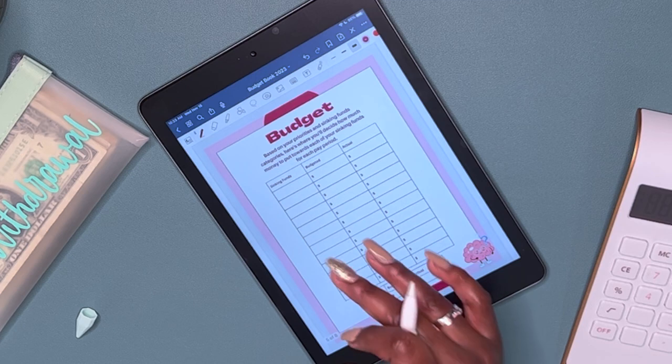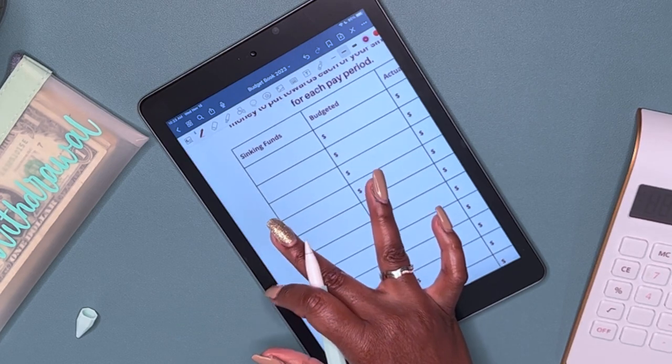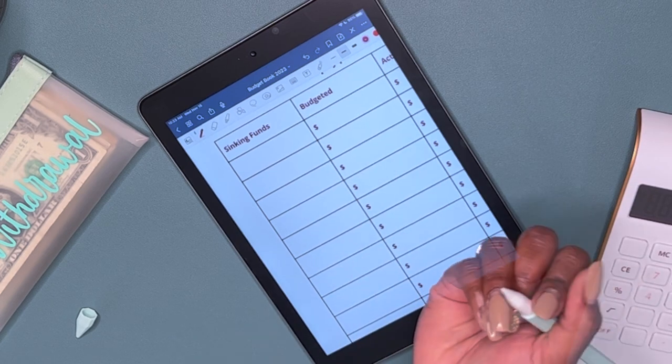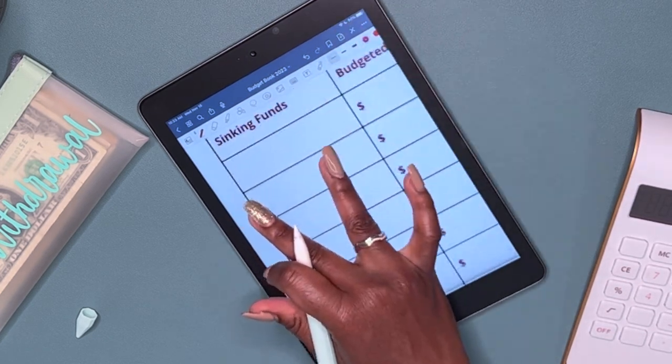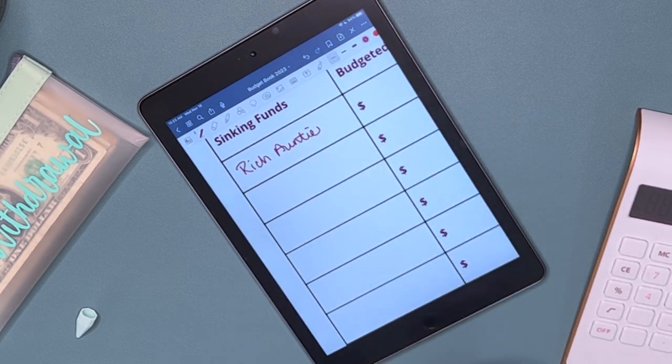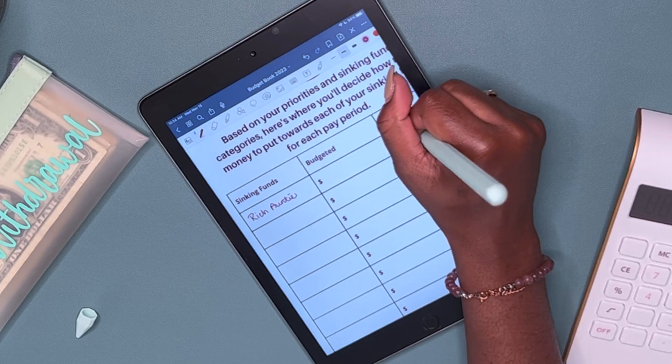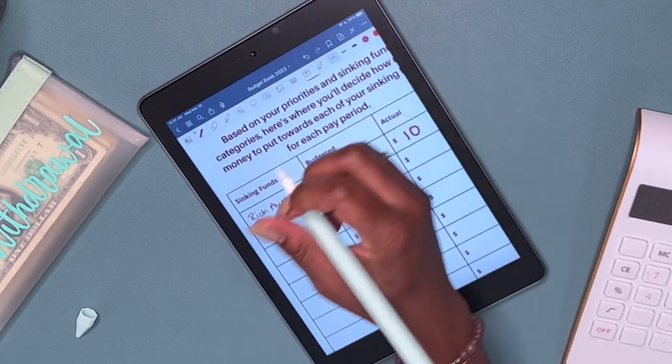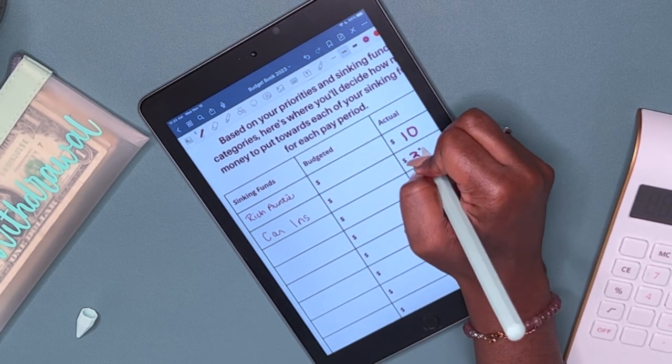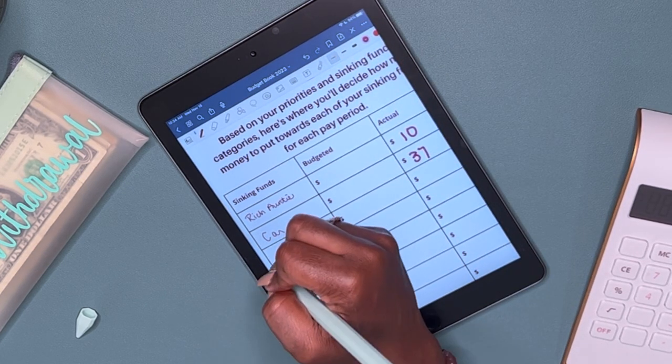So next I'm going to go to my sinking funds page and I'm going to put how much I'm putting towards each sinking funds. Only like three of them are getting money. So the first one is going to be rich auntie, and that is going to get $10.